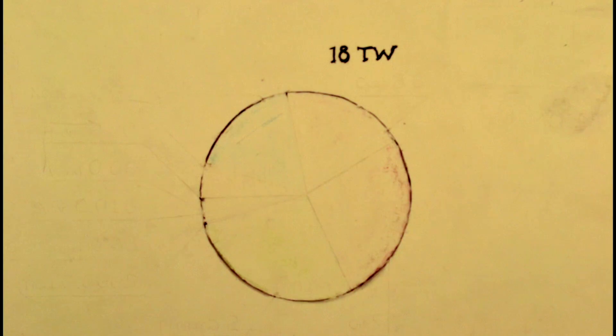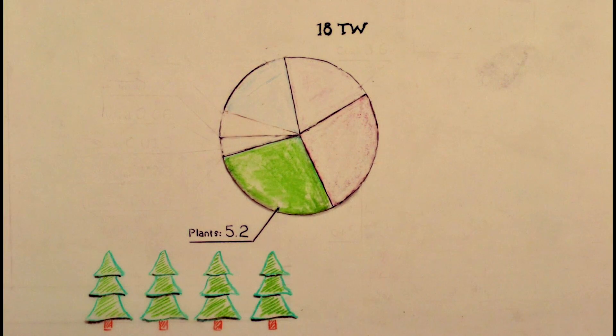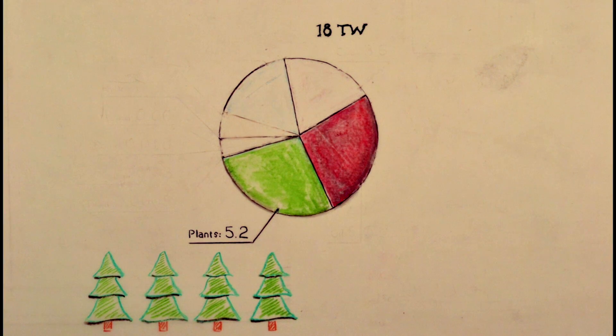Humans across the world currently use approximately 18 terawatts of energy each year. Plants provide nearly a third of this demand, while fossil fuels provide almost two-thirds.